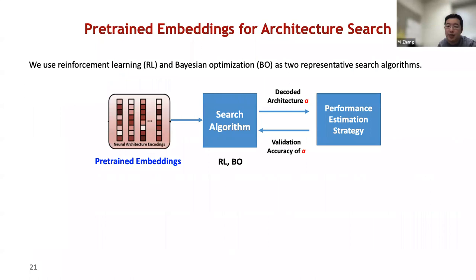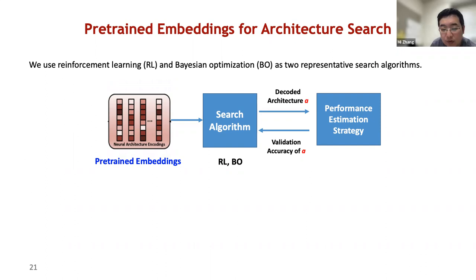Once the pre-trained embeddings are obtained, they are sent to the search algorithm downstream as inputs for architecture search. We use reinforcement learning and Bayesian optimization as two representative search algorithms. For reinforcement learning-based search, the pre-trained embeddings are passed to a policy LSTM for sampling, using validation accuracy as the reward. For Bayesian optimization-based search, the pre-trained embeddings are used to select the top-k architectures by validation accuracy in each search round.